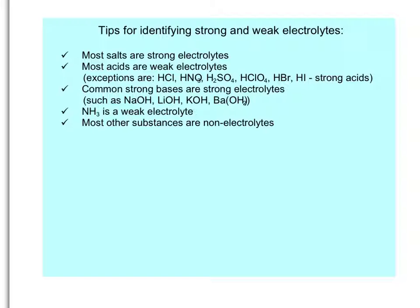This last slide is just a summary of the characteristics of strong and weak electrolytes to help you identify what they are. Most salts, especially those that are highly soluble, are going to be strong electrolytes. Most acids are weak electrolytes because most acids are weak acids. The exceptions are the strong acids, which are listed here: hydrochloric, nitric, sulfuric, perchloric, hydrobromic, and hydroiodic. Those are the six strong acids, and everything else can be considered a weak acid. Common strong bases, which are the soluble hydroxide compounds, are strong electrolytes. Ammonia NH3 is a weak electrolyte because it is a weak base, and so it only partially ionizes. And most other substances, besides the ones that we've already listed, like the examples on the previous slide, are non-electrolytes because they might dissolve in water, but they do not produce ions in water.